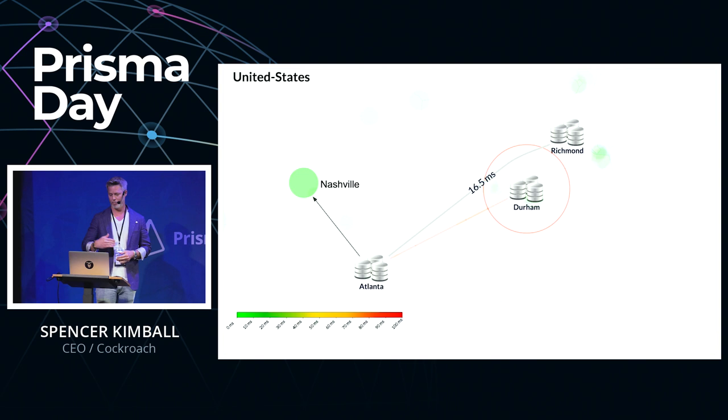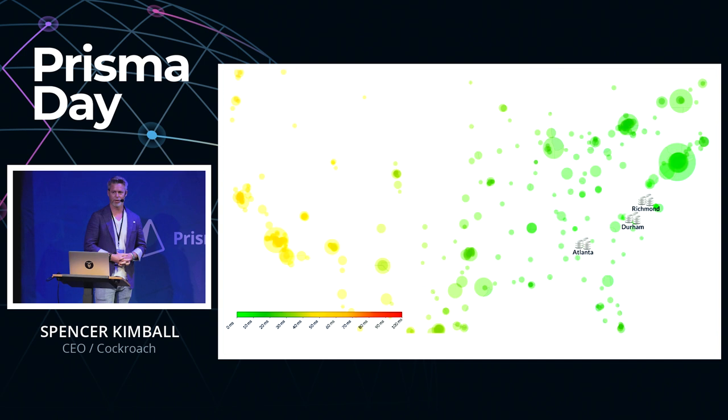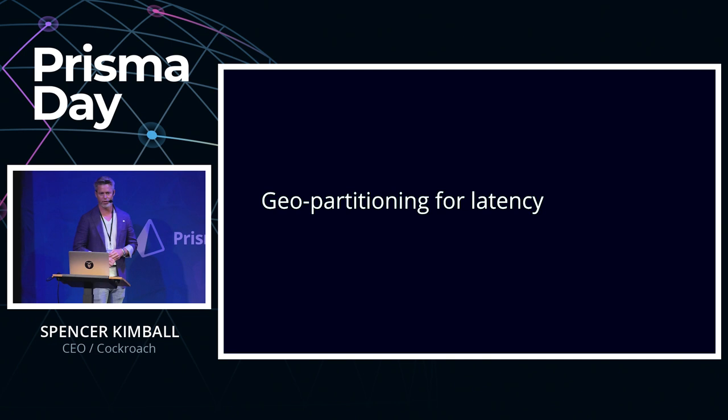When we zoom out, though, things don't even look so good in the US. Here the latency spectrum has been reconfigured — red is at 100 milliseconds. You can see that over in California, for this East Coast deployment, we actually start to flirt with 70 millisecond latencies. The solution to this is what we call geopartitioning.